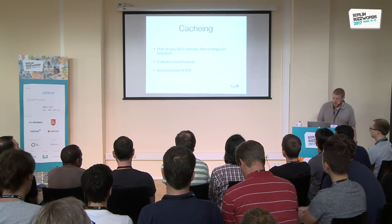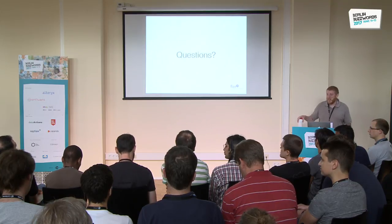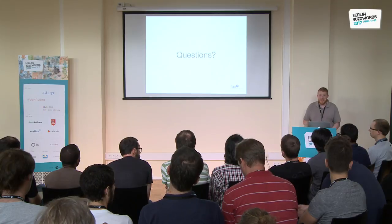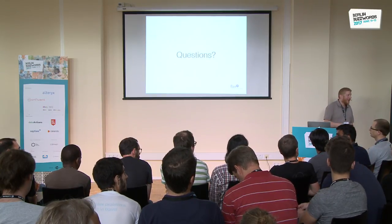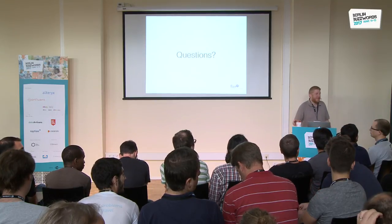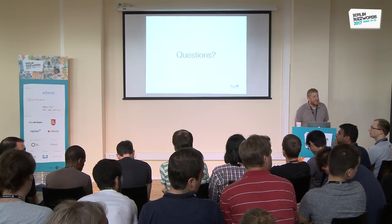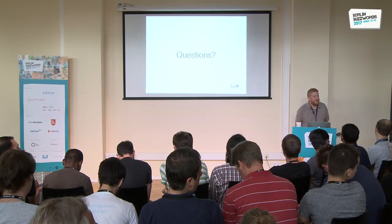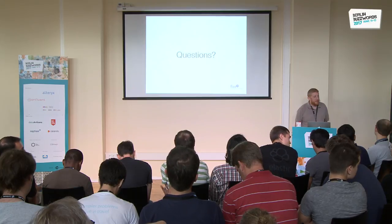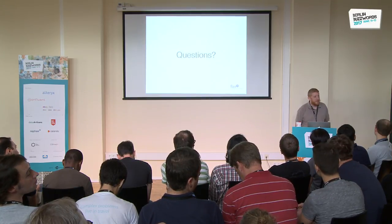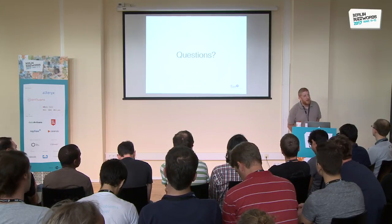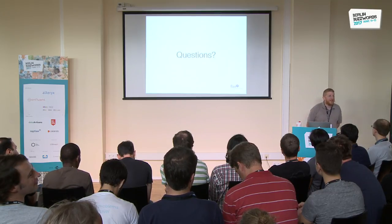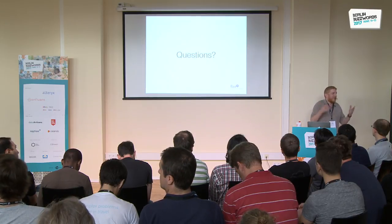Q&A: An audience member notes that everything seems to have an overall version and a leaf version, and that Scorer is effectively a leaf weight - has anyone ever considered renaming it? Alan responds that it's one of those things where someone could come up with a new name and everyone else would hate it. So we covered naming things and cache invalidation - all the hard problems. But yes, 'leaf weight' would be a good description of it.